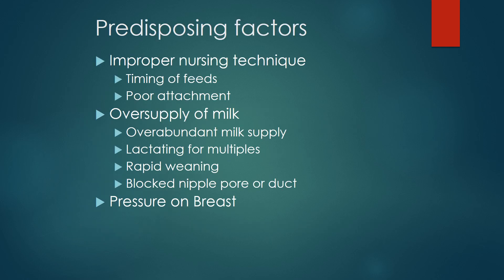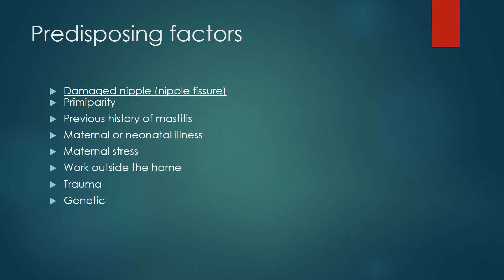Predisposing factors include improper nursing, oversupply, and pressure. Additional factors are nipple fissuring, primiparity, previous history of mastitis, maternal and neonatal illness, maternal stress and trauma, and genetic factors.